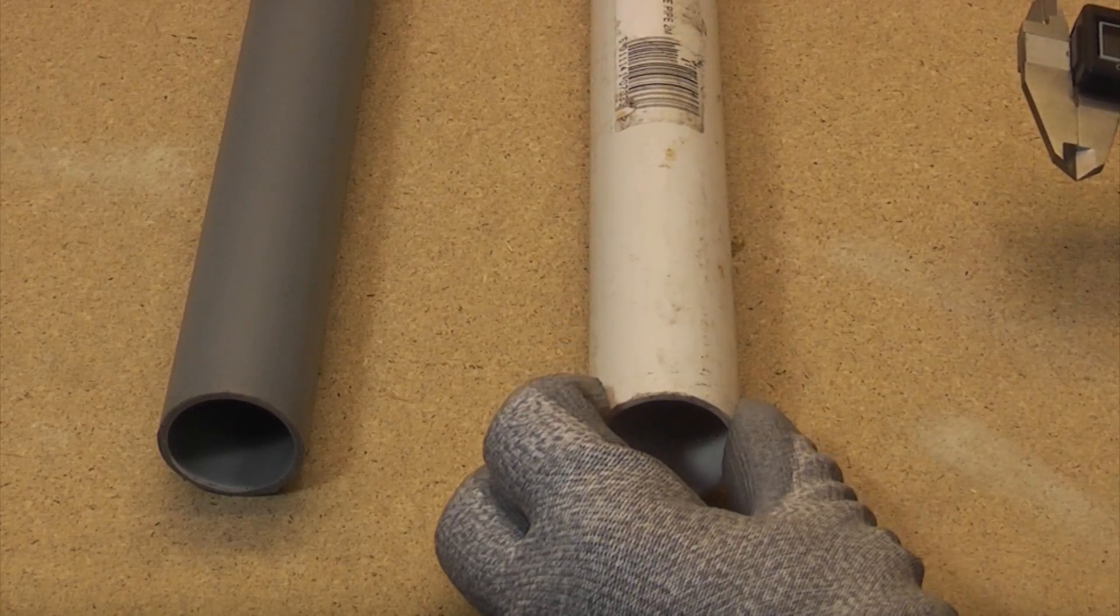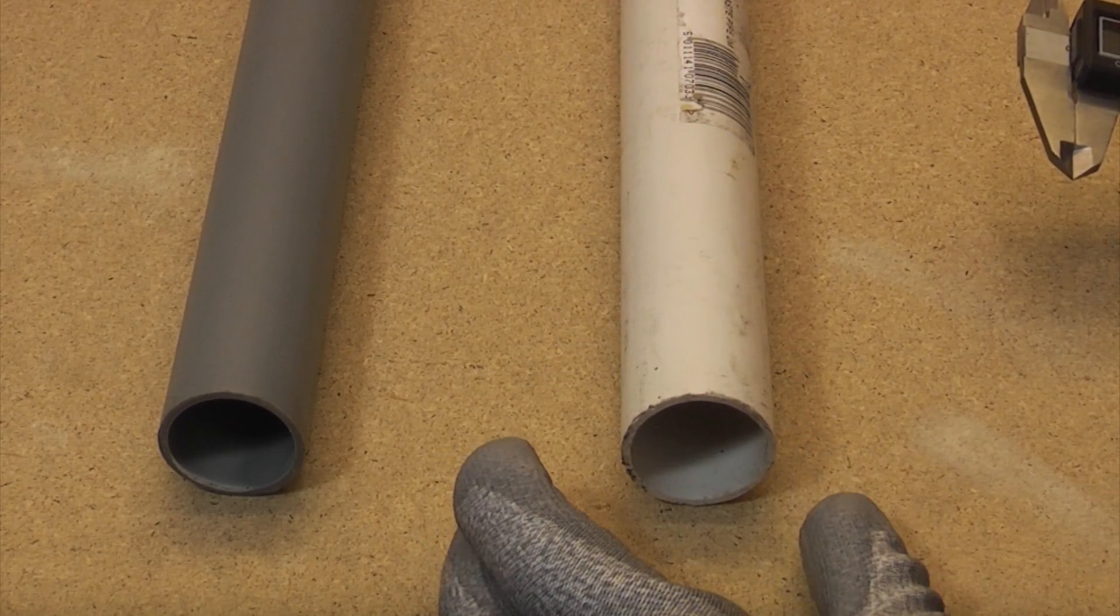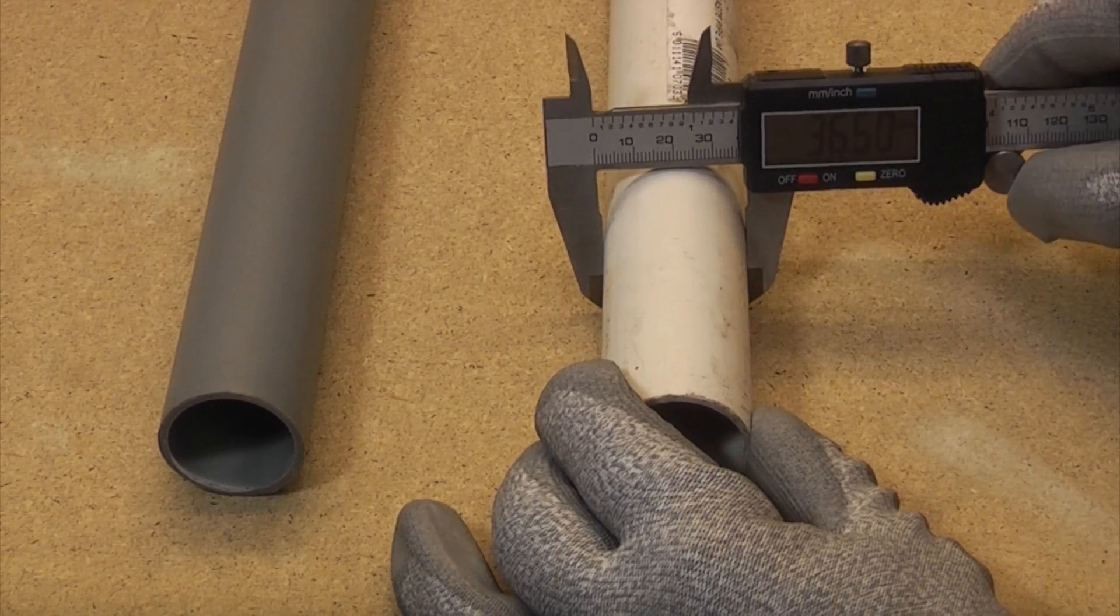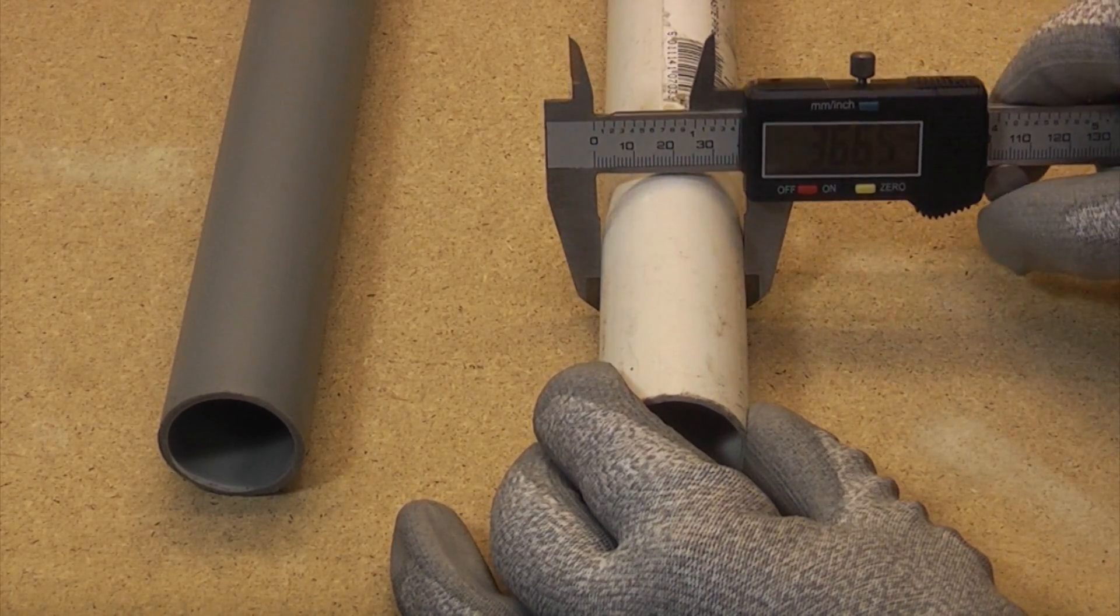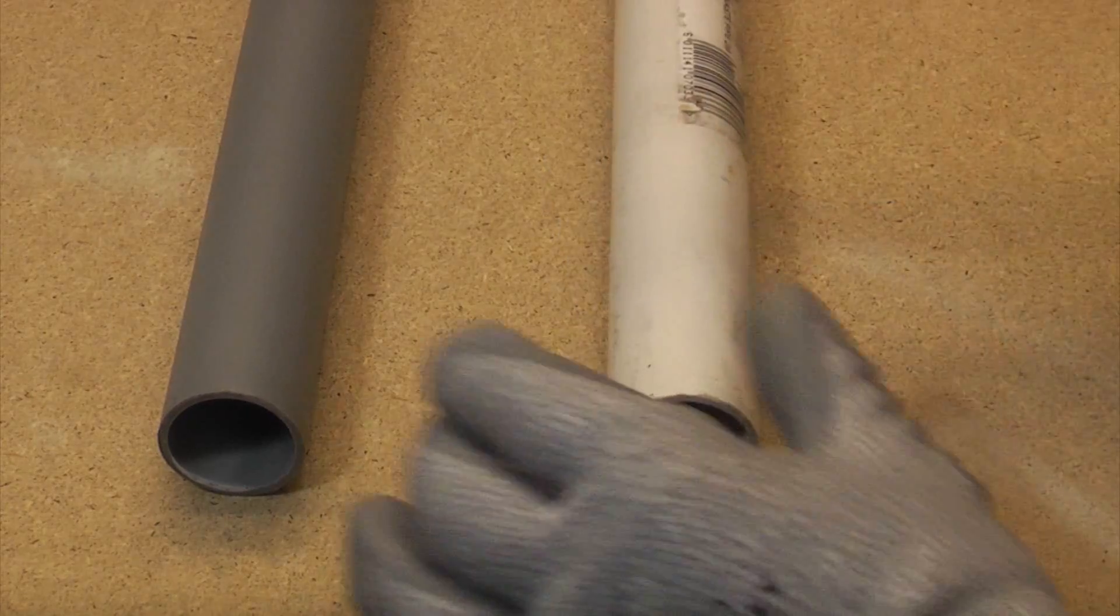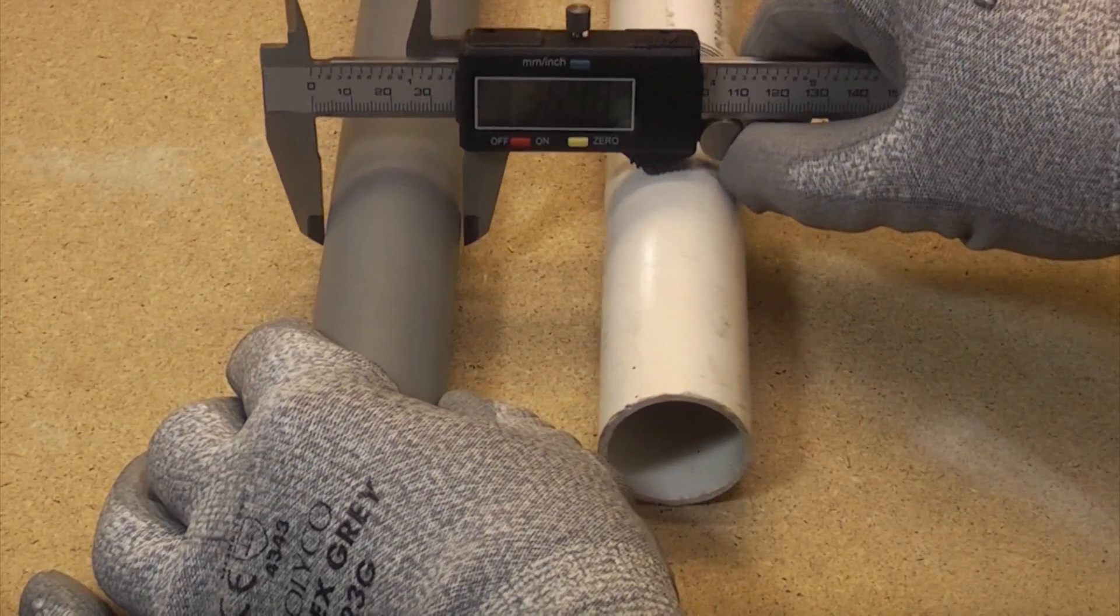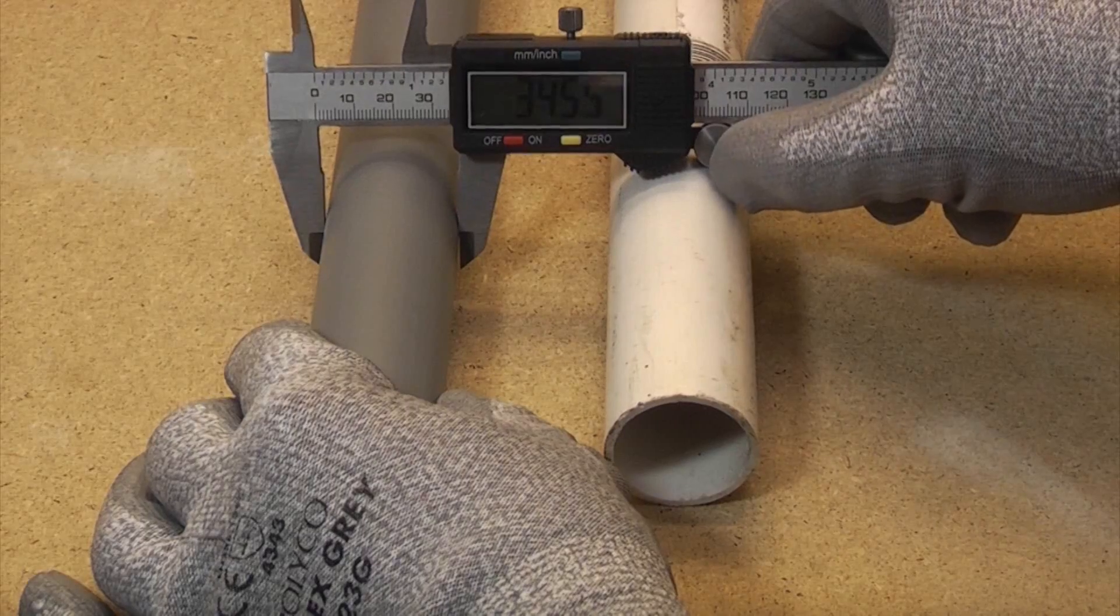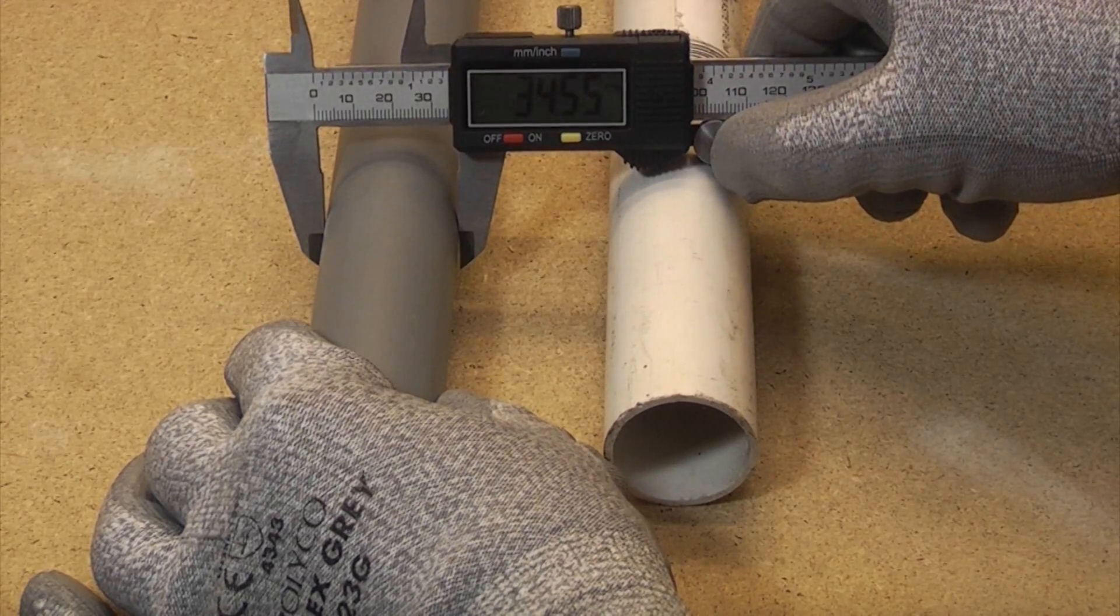These do come in a couple of different colors, so you've got to make sure that you get the correct pipe. So we'll just measure these using the vernier caliper, and you can see that that one's about 36mm and that pipe is considerably smaller, that's about 34mm.